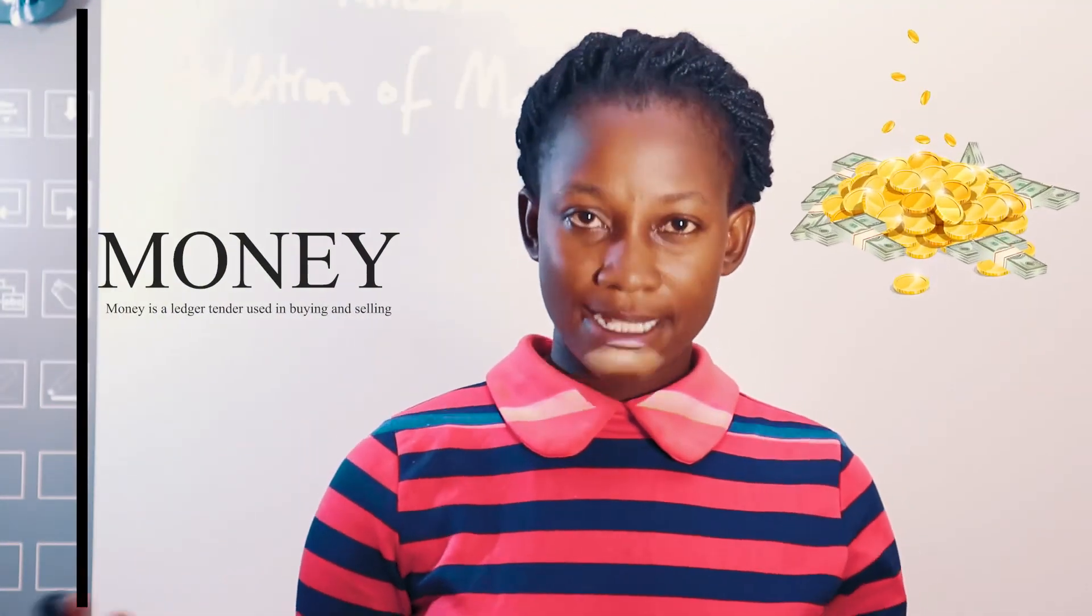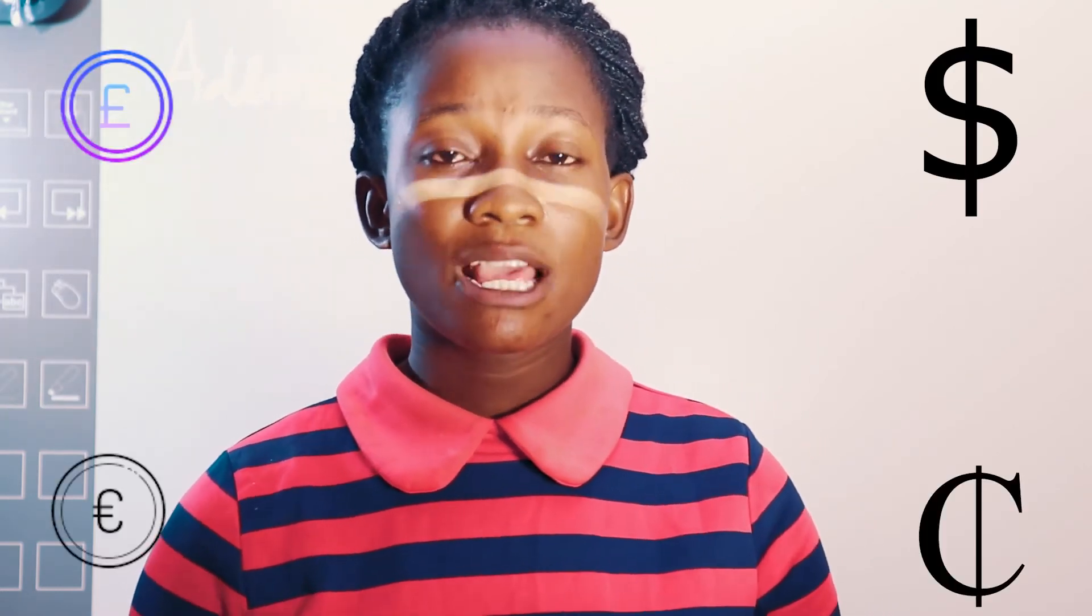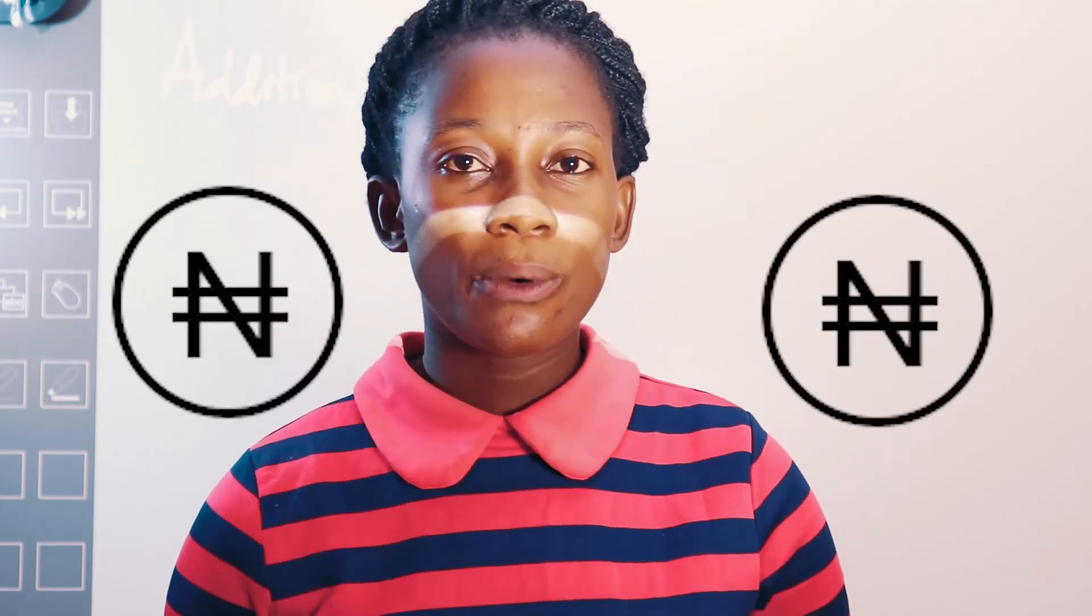Money is a legal tender used in buying and selling. Take for instance, when mom wants to buy ice cream for you, she pays money for an exchange of ice cream. We spend different currencies in different countries. Some countries spend currencies like dollars, pounds, euros and CDs. But in Nigeria here, we use Naira and Kobo.